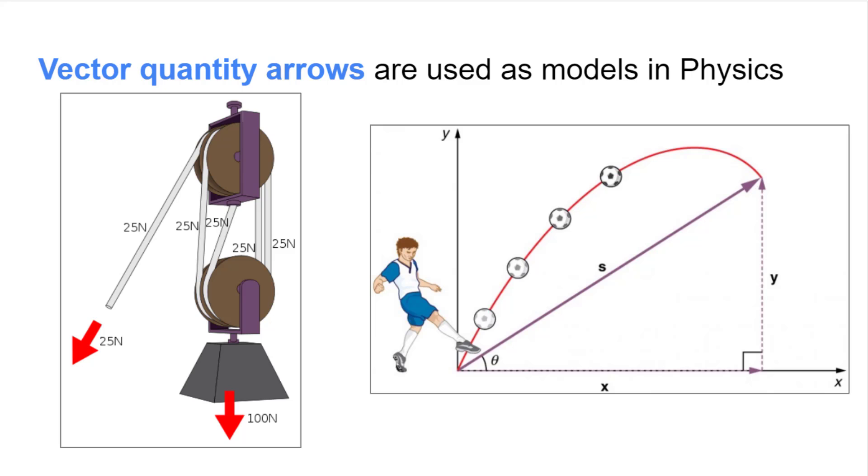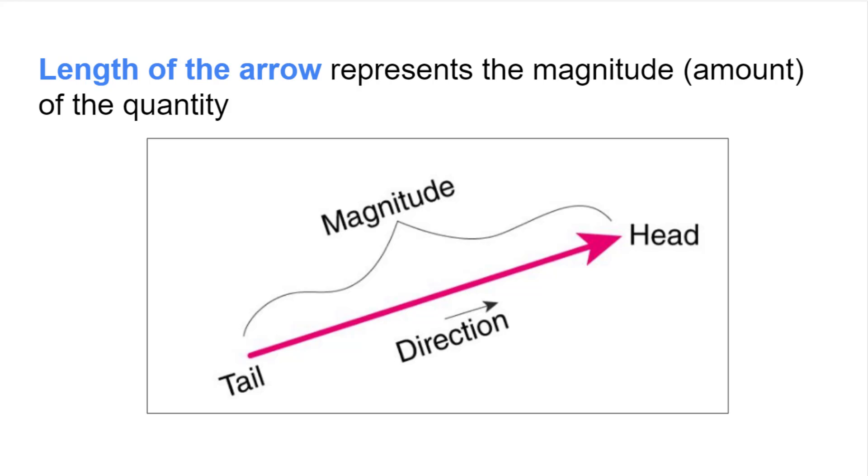In order to use these arrows to represent quantities, we must know two important rules. One, the length of the arrow represents the magnitude of the quantity. This means a longer arrow represents a larger number. A common issue occurs when we compare vector quantities.